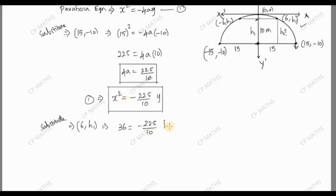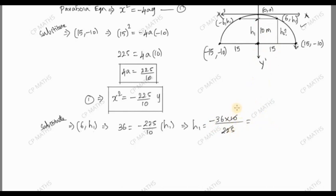We have y = h1. So 36 = -(225/10) × h1. Now solving for h1: 36 divided by 225, times -10. Simplifying: h1 = -360/225 = -8/5. So h1 = -8/5.